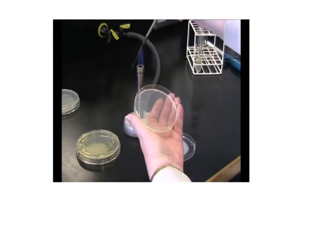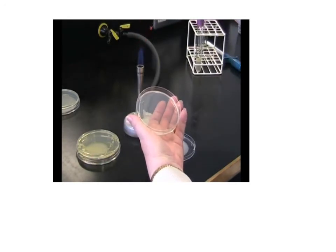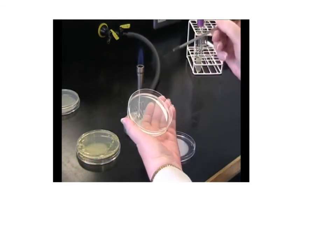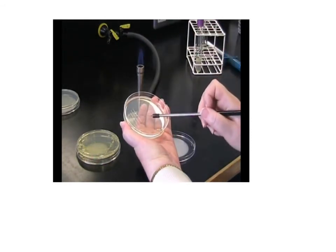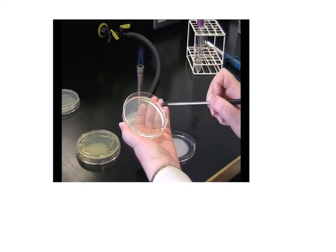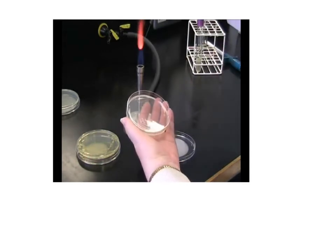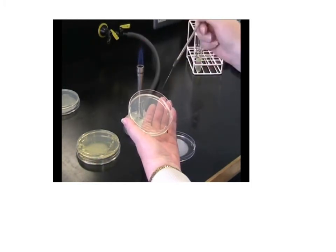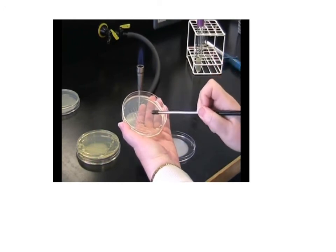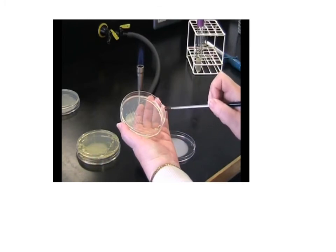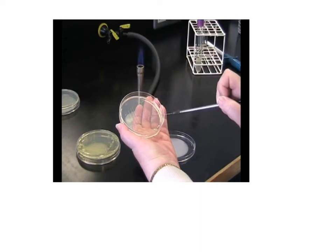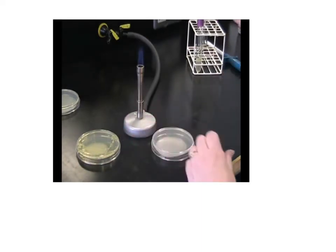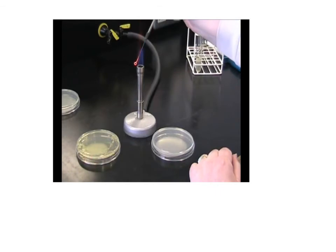It's important now to flame your loop again. Cool your loop and repeat this process, taking one streak from each of the four across your agar plate. At each point where you rotate the plate, you need to cool, flame and cool your loop. By doing this you are diluting the number of bacteria on the loop. Finish with a streak down the centre of the plate. Replace the lid and always finish by flaming your loop to avoid contamination.